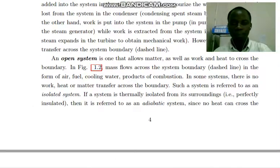As you can see, air, fuel, as well as cooling water in and out can mingle across these dashed lines. In this figure, the mass flow across the system boundary in the dashed line is in the form of air, fuel, cooling water, and products of combustion.